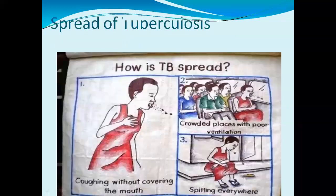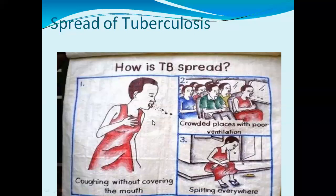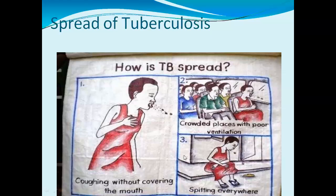The spread or transmission of tuberculosis occurs from a diseased person to a healthy person. A person suffering from TB, when coughing without covering the mouth, adds pathogens into the air, since the pathogen is present mainly in the respiratory system. Coughing, talking, or sneezing without covering the mouth or nose releases Mycobacterium tuberculosis into the air. Crowded places with poor ventilation and spitting everywhere also contribute to transmission.